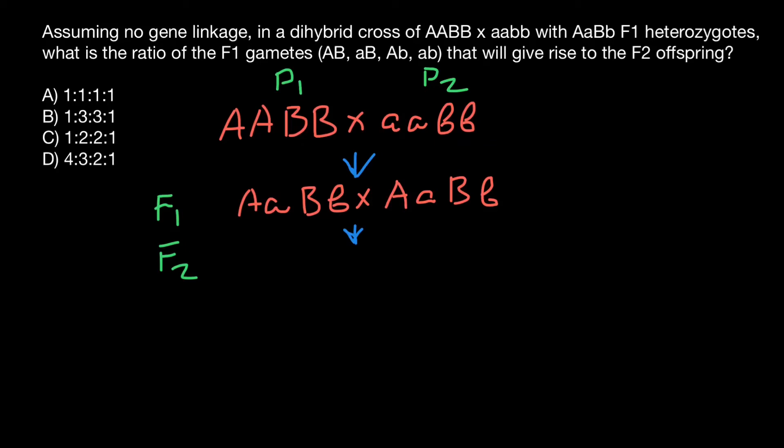Let's take the first one. Gametes are haploid, so would have only one allele from each allelic pair. The first variant would be capital A and capital B. Second variant would be capital A and small B. Another variant would be small A and capital B. The last variant would be small A and small B.